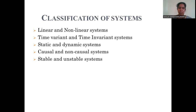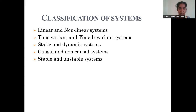Systems are classified similarly to signals — into continuous time systems and discrete time systems. The major classifications of systems include: linear and non-linear systems, time-variant and time-invariant systems, static and dynamic systems, causal and non-causal systems, stable and unstable systems, and also invertible or non-invertible systems, and FIR and IIR systems.